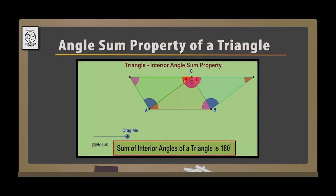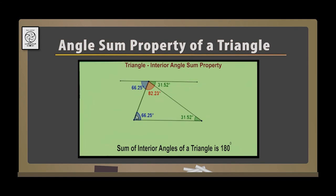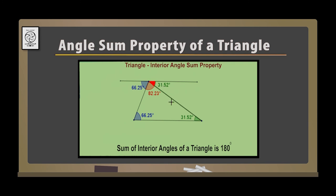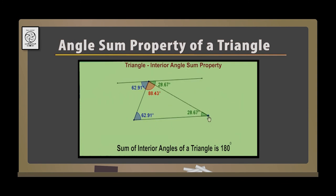All the three angles — angle A, angle B, and angle C — add up and form a straight angle. This can also be proved by drawing a line through one of the vertices. Through this point, if you draw a line parallel to this side, you will find that this angle is always equal to this angle because they are alternate angles. Similarly, this angle is equal to this angle — they are alternate angles. If I drag this point, you will find these alternate angles remain equal. Hence, the sum of the three angles always adds up to 180 degrees.